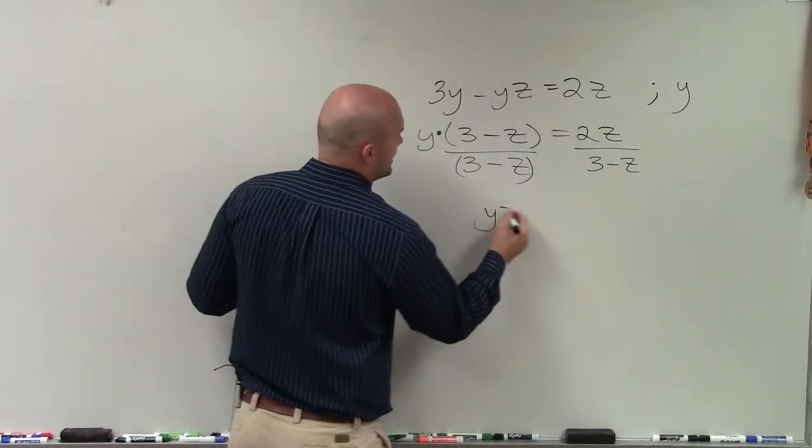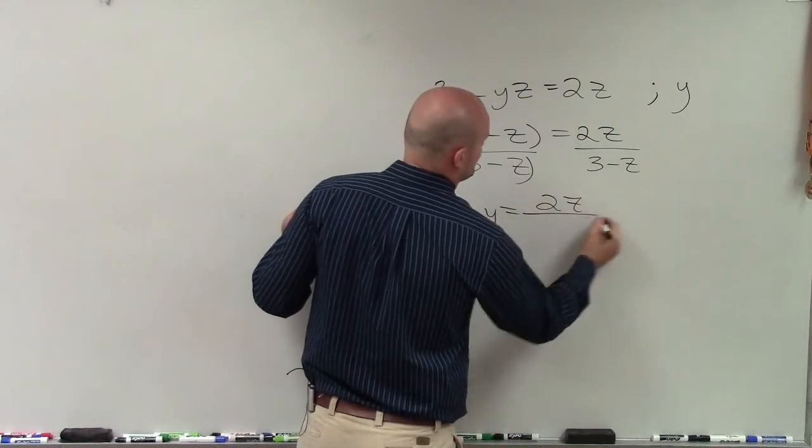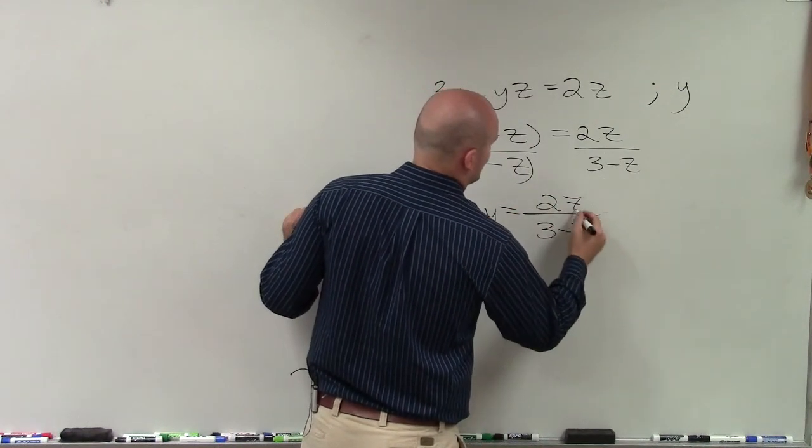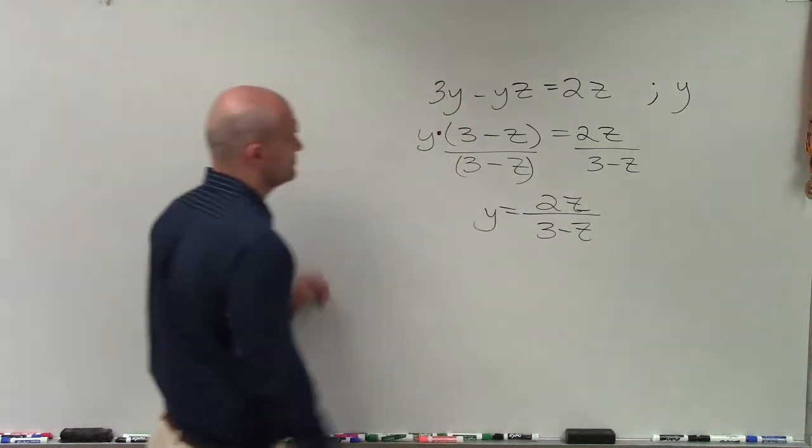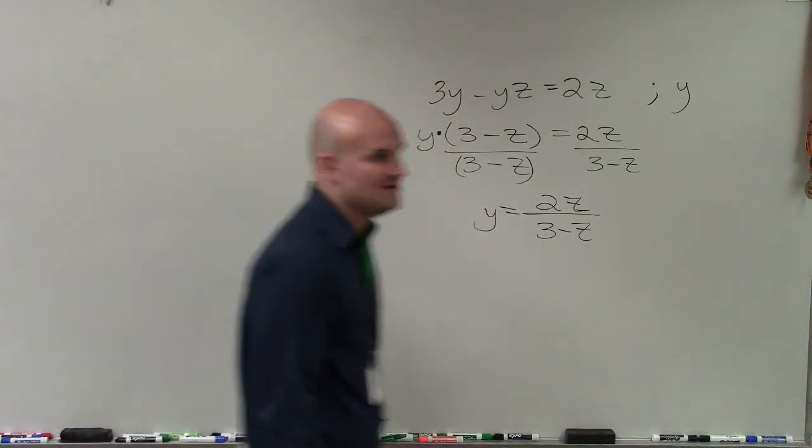So therefore, I have y equals 2z divided by 3 minus z. And that's it. Done. Fine.